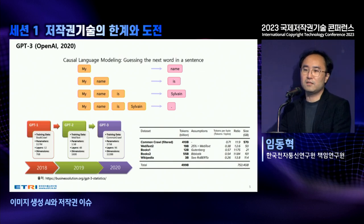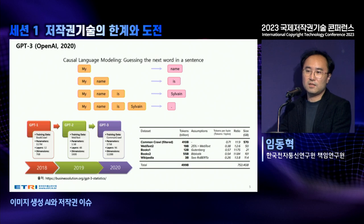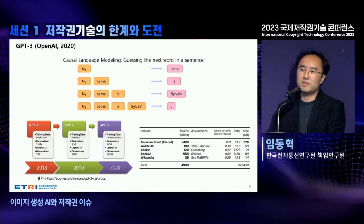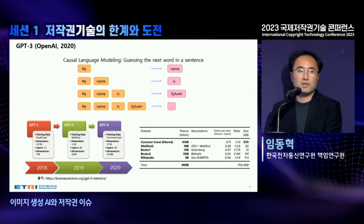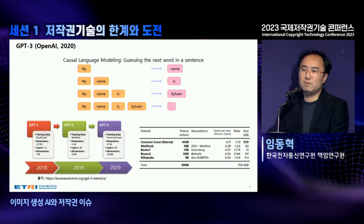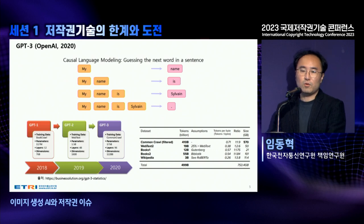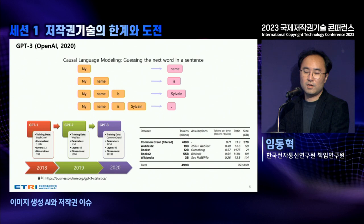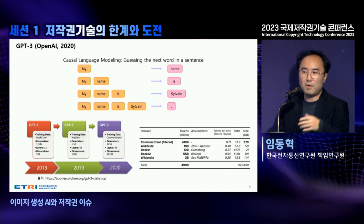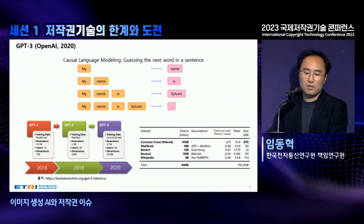In 2020, OpenAI launched GPT-3, which is the previous version of ChatGPT. GPT-3 is very important because image-generative AI also partially uses GPT-3-related techniques. GPT-3 learns in a simple way — it basically guesses what the next word will be in a sentence. For example, given the learning data 'my name is Sylvain,' if it sees 'my,' it guesses the next word will be 'name.' This is a simple idea.